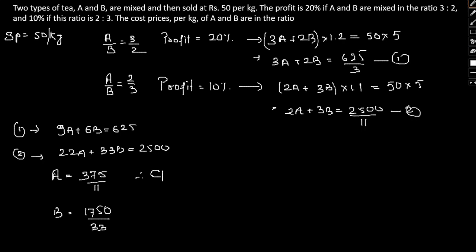Therefore, CP of A will be 375 by 11 rupees per kilo, and CP of B will be 1750 by 33 per kilo.